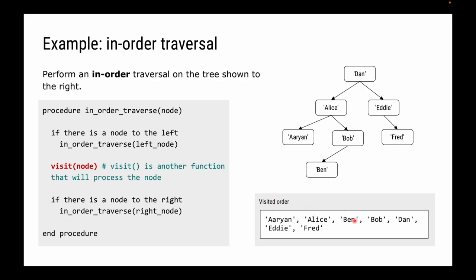The order of traversal is different this time, and there's something very specific about it: Arian, Alice, Ben, Bob, Dan, Eddie, Fred. You should see that this is in alphabetical order. That's one of the properties of a binary search tree — if you perform an in-order traversal of a binary search tree, you will get the items printed out in sorted order.